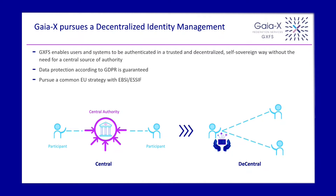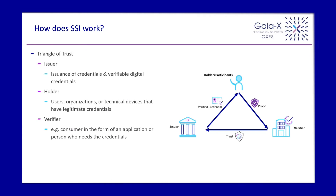In the future, we will go more strictly in the direction of EPSI-SF solutions. At the moment, we started with the common SSI solutions to solve the problems within the GXFS system. So, how does it work? In a rough overview, we have this triangle of trust.